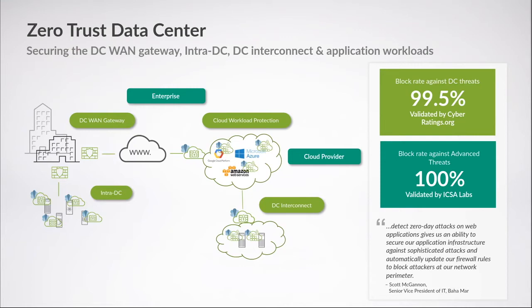When you get to the intra-DC — within the data center looking mostly at east-west traffic — you want to make sure that the communications between groups of services and the applications within them are all protected. And then the last piece is cloud workload protection, because you can have firewalls all the way down to the container level.